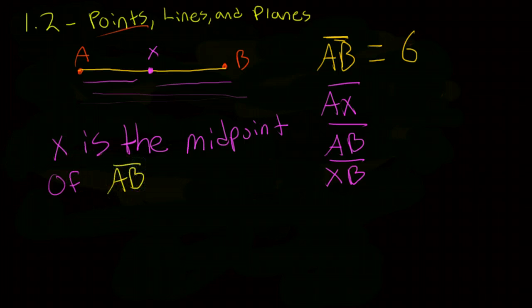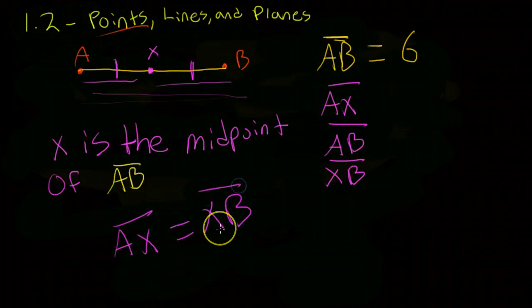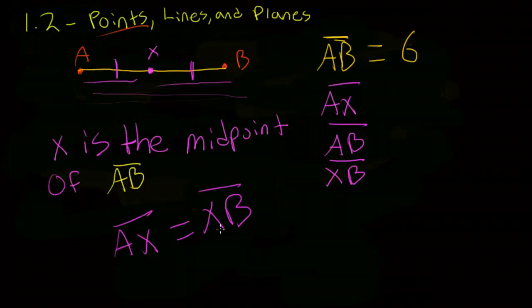And now, what if I told you that X is the midpoint of segment AB? Well, now I can do something like this. Put a line here, put a line here. That means that AX is equal to XB. Because if X is the midpoint of AB, if point X is directly in the middle of the segment AB, then we know that AX is half of AB, just as BX, or XB is half of AB, so they must be equal.